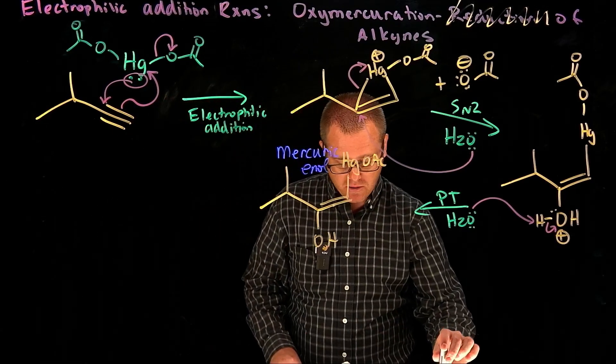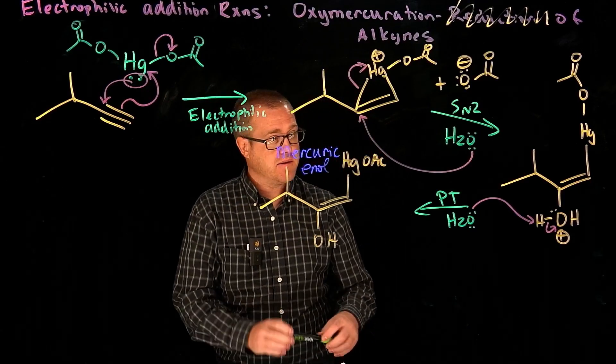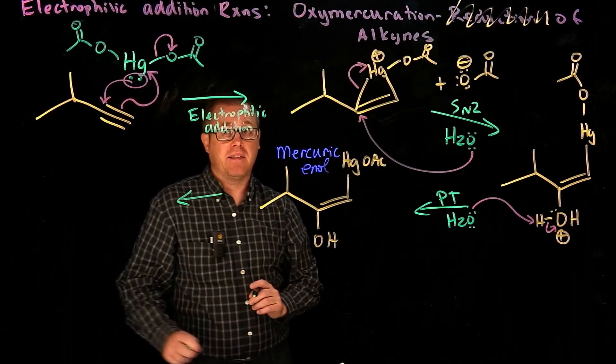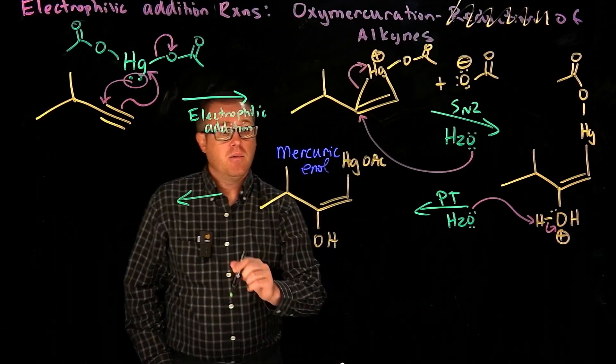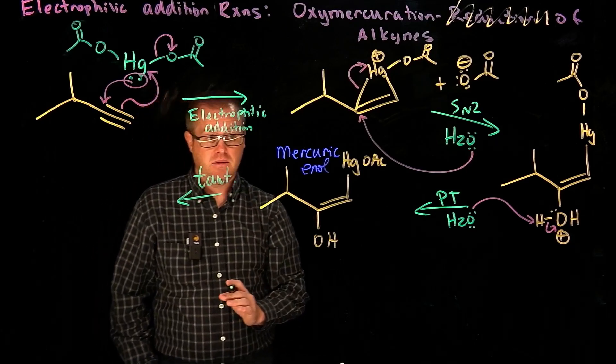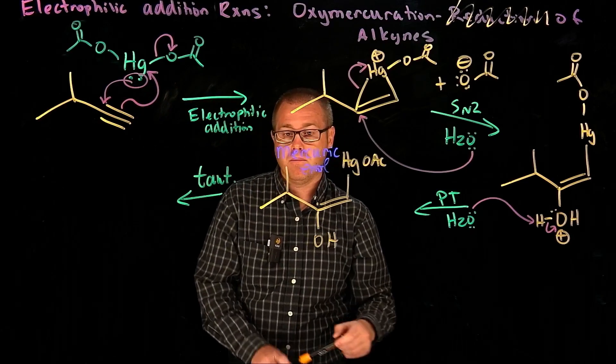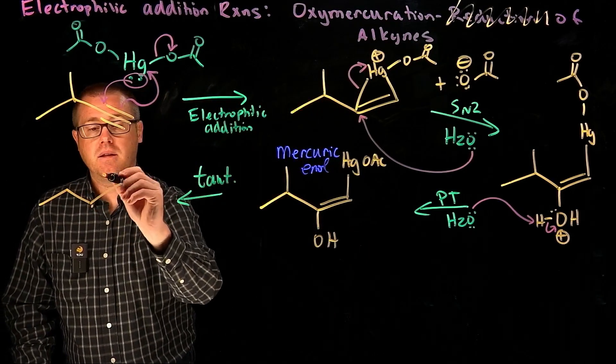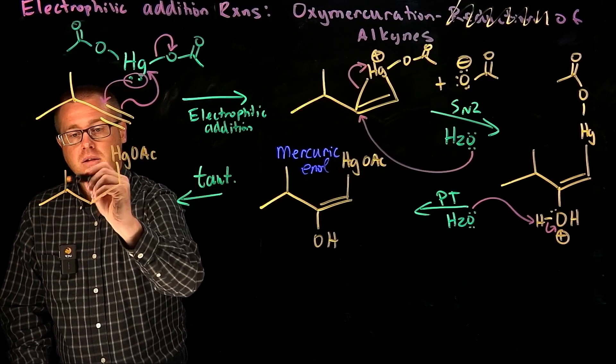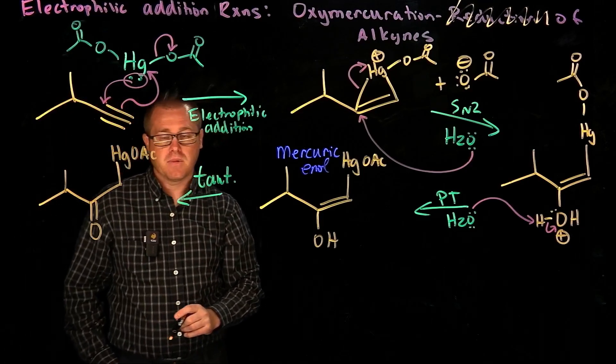What I'm going to do now is I'm not going to show the details of the next step because you could look at the other videos, but we're just going to do a simple tautomerization. So that's going to tautomerize into the keto form like this. Our mercury is still present.